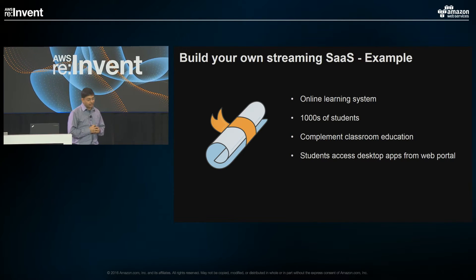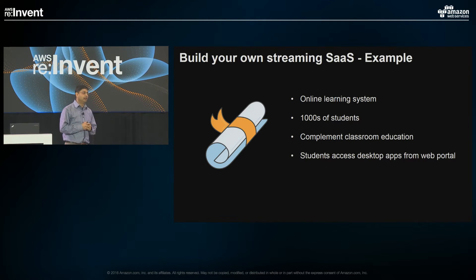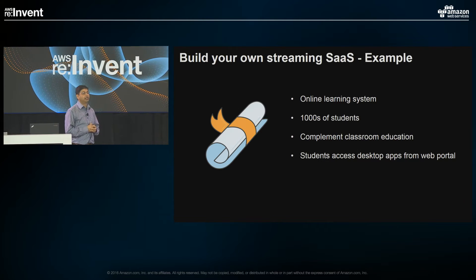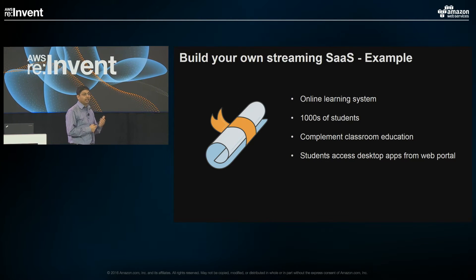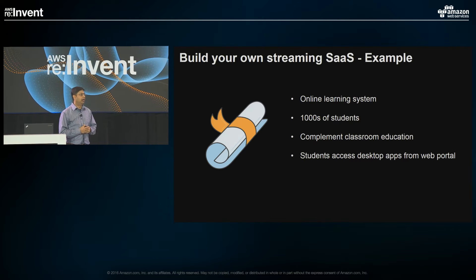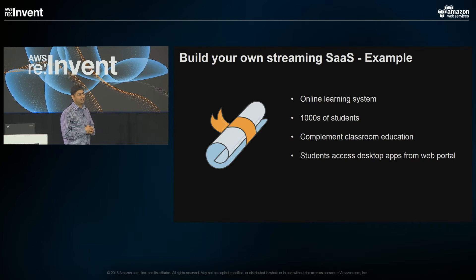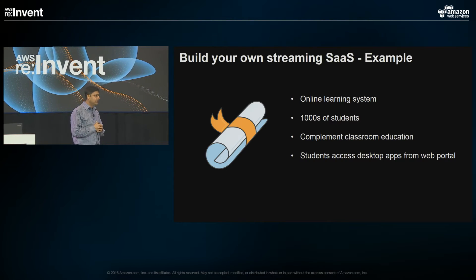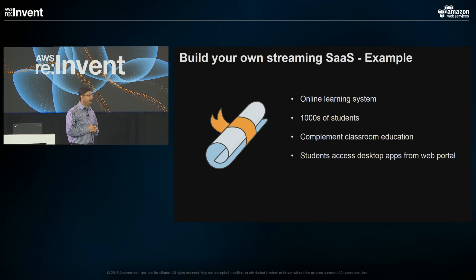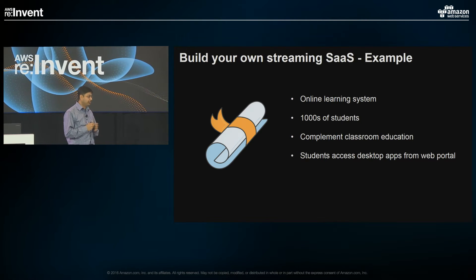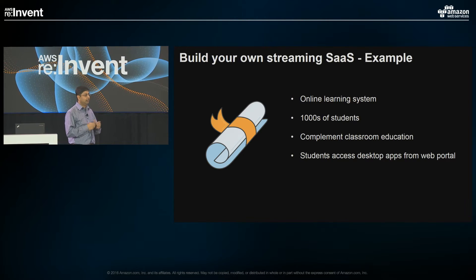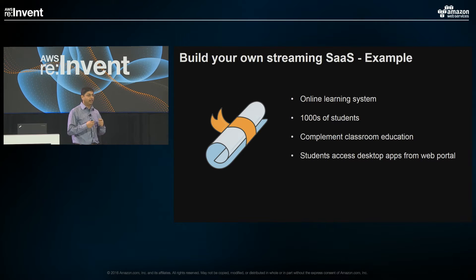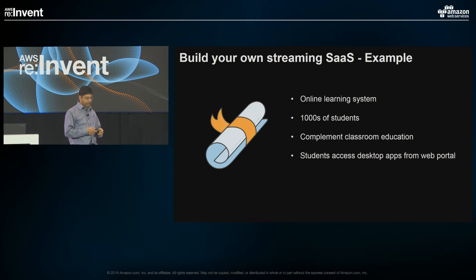For the next few slides, I'm going to use an online learning example — which applies to ISVs, public sector, and education customers. Let's say you want to launch an online learning system where thousands of students get enrolled but you don't want to deploy or manage any infrastructure. Thirty minutes before the class starts, you give them streaming URLs, the class starts, and at the end you just want the infrastructure torn down. You pay for that one hour when the infrastructure is running for those thousand instances. We'll look at the building blocks required and how AppStream 2.0 addresses them.